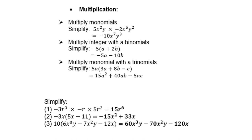y times y squared is y to the power 3. Multiply an integer with a binomial: negative 5 times a is negative 5a; negative 5 times 2b is negative 10b. Multiply a monomial with a trinomial: 5a times 3a is 15a squared; 5a times 8b is 40ab; 5a times negative c is negative 5ac. Simplify: negative 3r cubed times negative r times 5r squared — two negatives make a positive, and 3 times 5 is 15; adding exponents of all the r's gives r to the power 6. Also: negative 3 times 5x is negative 15x squared; negative 3x times negative 11 is positive 33x.